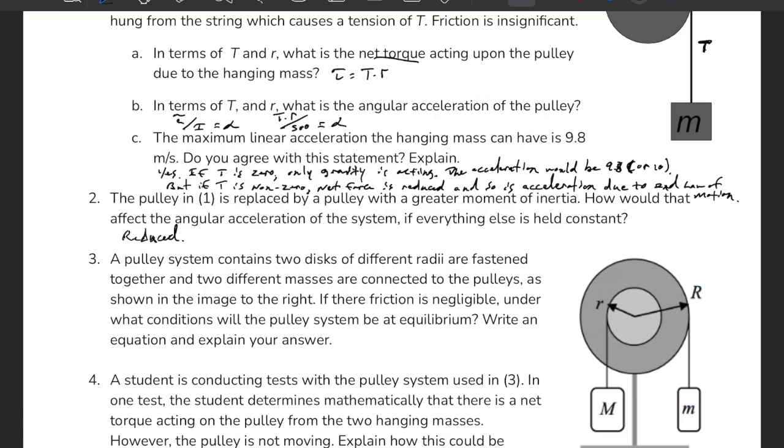A pulley system contains two disks of different radii fastened together and two different masses connected to the pulleys. As shown in the image to the right. If there friction is negligible. There was misspelled. It wasn't a their. Anyway, under what conditions will the pulley system be at equilibrium? Write an equation. Explain your answer.